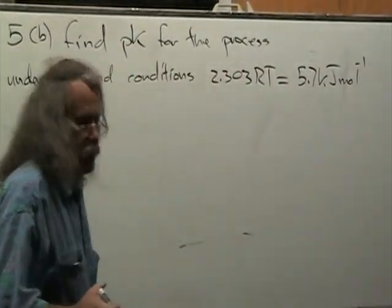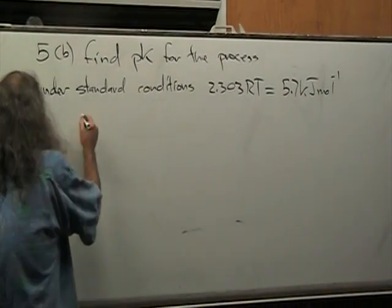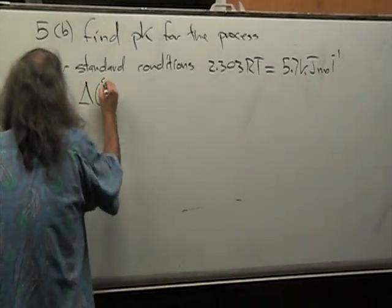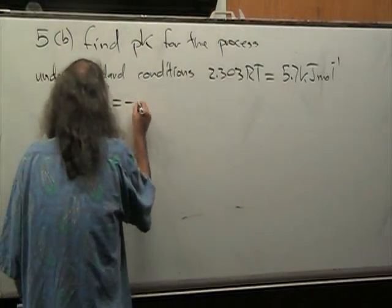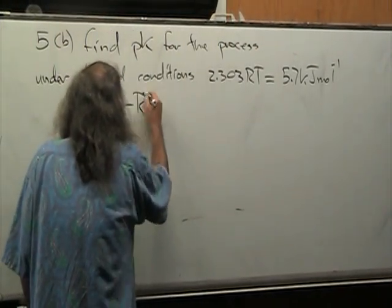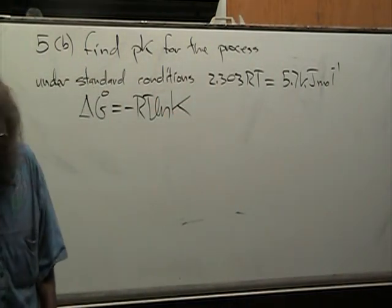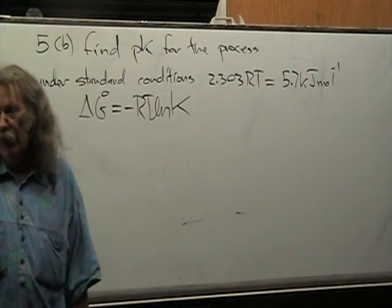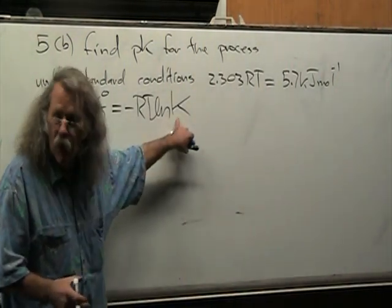Okay, that is going to be very advantageous since we know that the Gibbs free energy under standard conditions, delta G naught, is equal to minus RT natural log of K, where this K is not the K of Kelvin. It's the mass action law, it's the equilibrium constant.